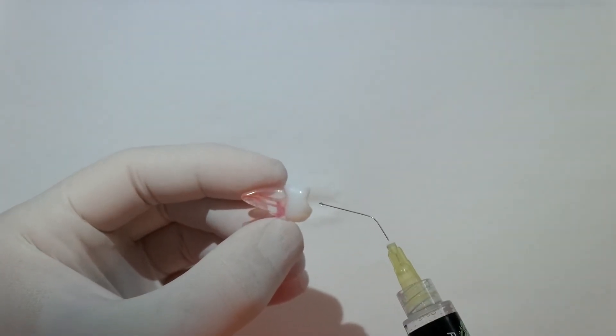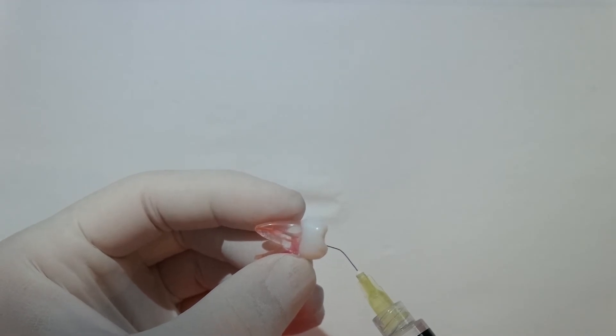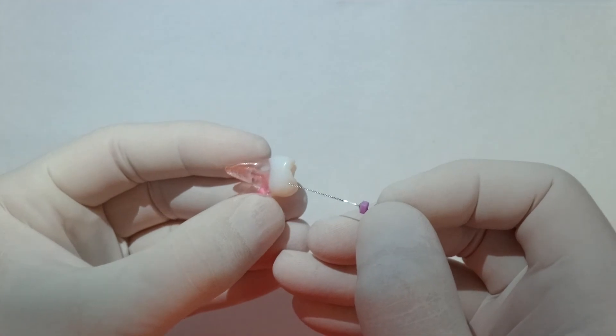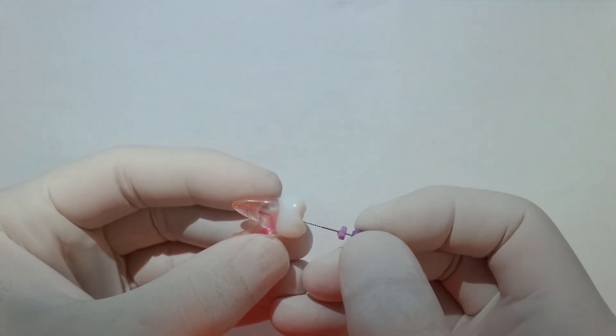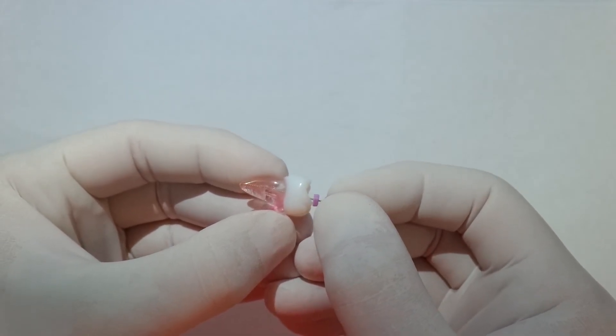Back in with the sodium hypochlorite, and then we'll patency file again just to make sure that's completely free from any blockages, right from the top right down to the bottom. Just bounce that, make sure that's really nice and patent.